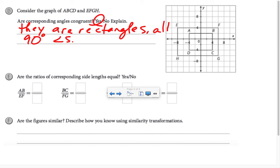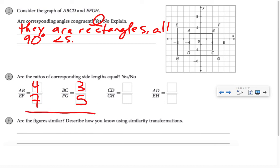Are the ratios of the corresponding side lengths equal? Let's figure that out. AB is 4, EF is 7, BC is 3, FG is 5. At this point, I have no need to find any other ratios. I can already see these ratios are not the same. So are the figures similar? No.